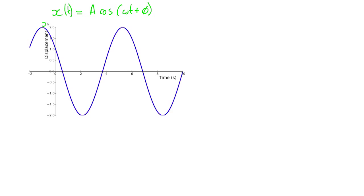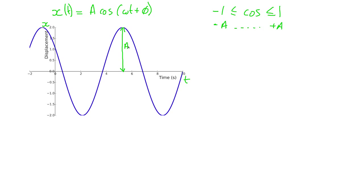The y-axis shows our displacement x, and the x-axis shows our time t. Don't be confused by the fact that our displacement, which is called x, is actually on the y-axis — this is a convention of physics. You always plot time along the x-axis. We know that the cosine function goes between minus 1 and plus 1, so when we multiply it by A, we go between minus A to plus A, and so that distance is just equal to A — this is the maximum displacement from our equilibrium position.